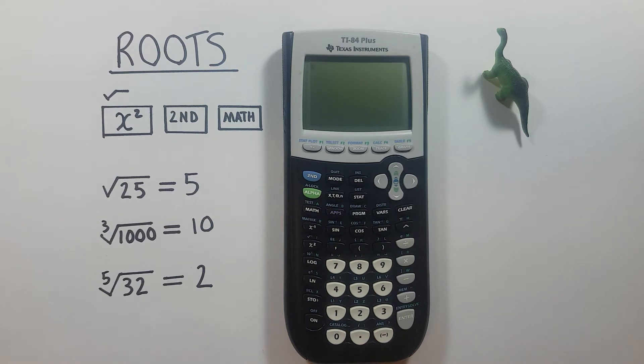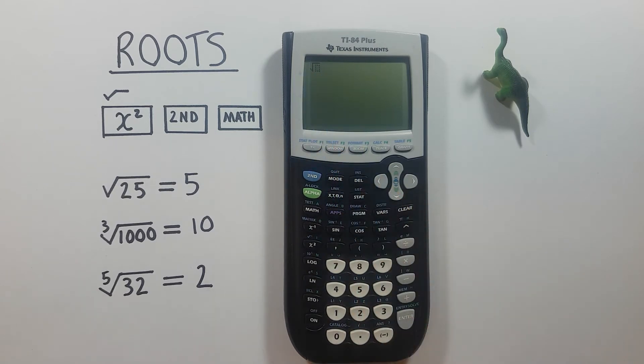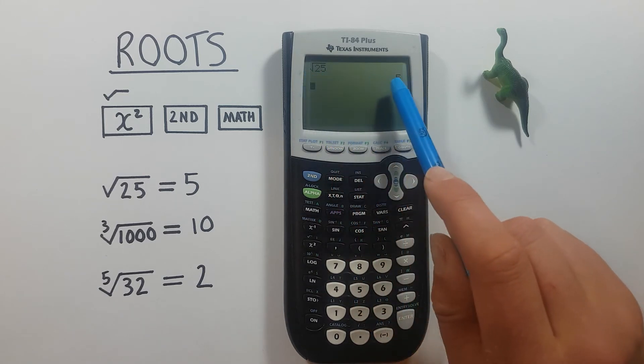Starting simply, if we just want to square root a number, like say find the square root of 25, we press second function x squared so that a square root symbol appears with an open box underneath. We then enter our 25 and press enter and we get the result that the square root of 25 is equal to 5.